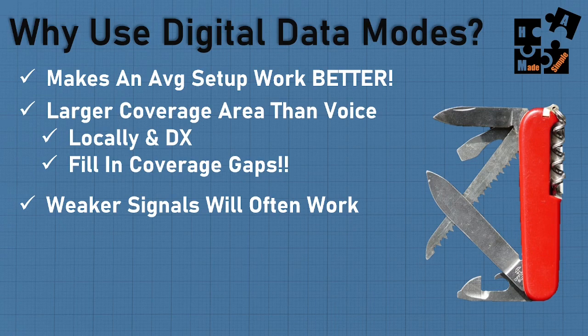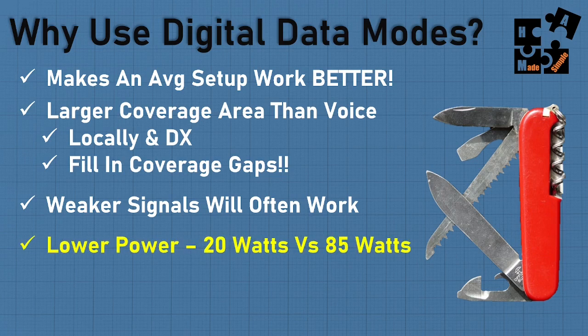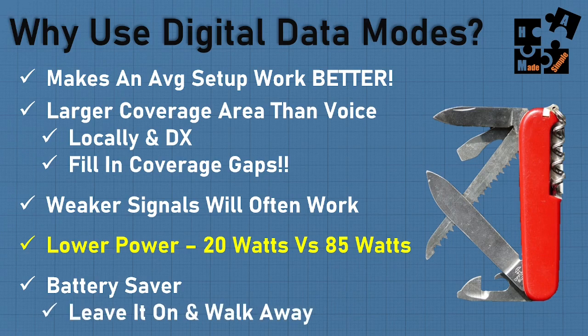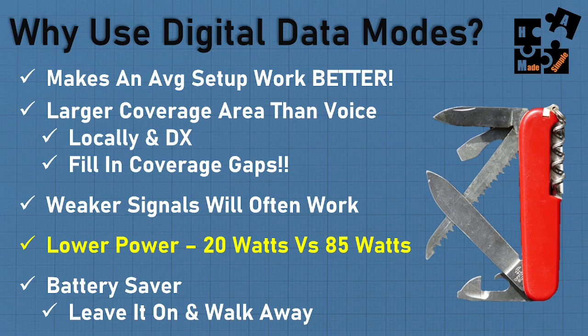The cool thing about HF digital modes is I can use weaker signals and they will often work. Instead of cranking it out at 85 to 100 watts for voice, I can do 20 watts or less — maybe up to 35 watts. The goal is lower power because you want to save your batteries. If there's no grid power, I use solar backup to charge my batteries and use lower power to run all day long. When someone leaves a message, it's in my pop-up window — I can come back and respond. In receive mode you're using very little amperage compared to transmitting, and 20 watts versus 85 watts is a huge difference.